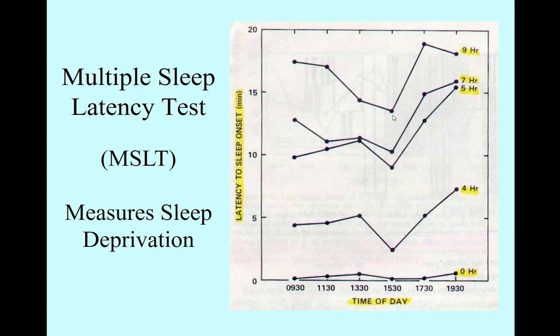Notice that this little dip right here, at 3:30 in the afternoon, it takes less than 15 minutes to fall asleep. Think about that. Right after lunch, about 2 to 4 o'clock, right in that window, you can get very sleepy. This is what's called the postprandial dip.